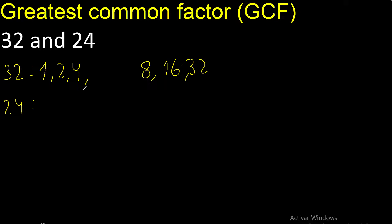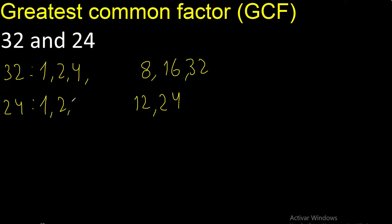Factors — always start with 1. 24 divided by 1 is 24. Next, divided by 2 is 12. Next, divided by 3 is 8.